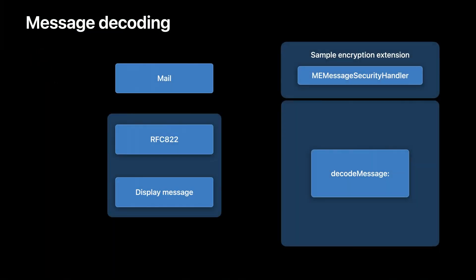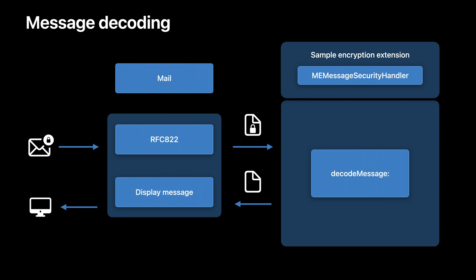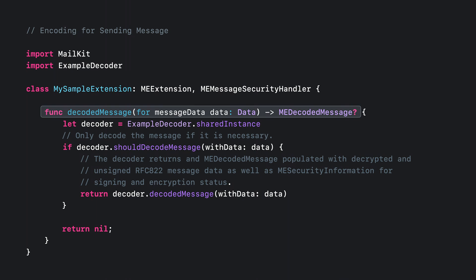Message decoding works similarly but in reverse. When the message is viewed, Mail will send the encoded RFC822 message data to the extension. The extension will decode the message into non-encrypted or signed RFC822 data and return that back to Mail. Mail will then display the decoded message. When Mail is ready to decode the message, it will call into the extension's security handler, calling the decode message method. If the extension has the ability to decode the message, it will do so and return the decoded RFC822 message. If the extension is not needed for decoding the message, it should quickly return nil.